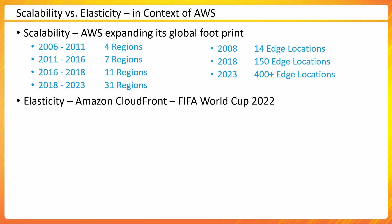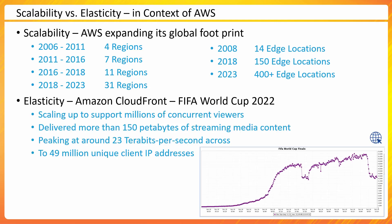Let me take another example. The FIFA World Cup in Qatar in 2022 used Amazon CloudFront for content distribution. 19 plus channels used CloudFront to deliver content to their customers during live matches. It scaled up to millions of concurrent viewers, delivered more than 150 petabytes of streaming media content, peaking around 23 terabytes per second, and served 249 billion unique client IP addresses.